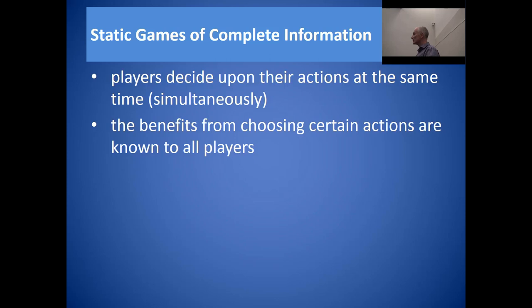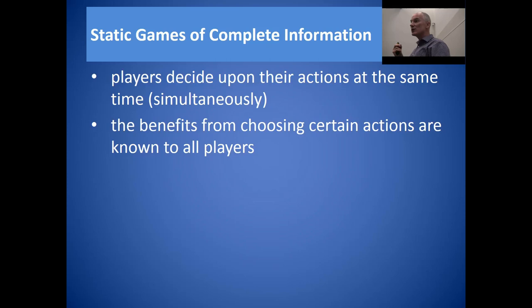As opposed to dynamic games — which we'll look at the week after next — where players take it in turns to make their move. In this initial foray into game theory, we're only looking at static games where players choose their actions at the same time. We're also looking at the scenario where the benefits players derive from choosing a certain course of action are known perfectly to them and to all other players. These are games of complete information.